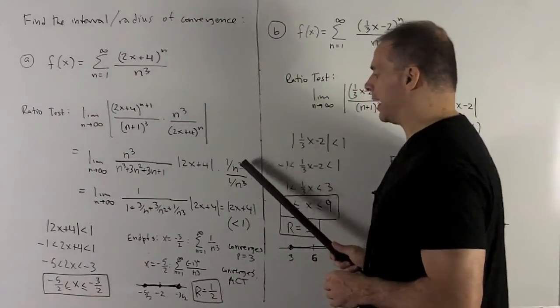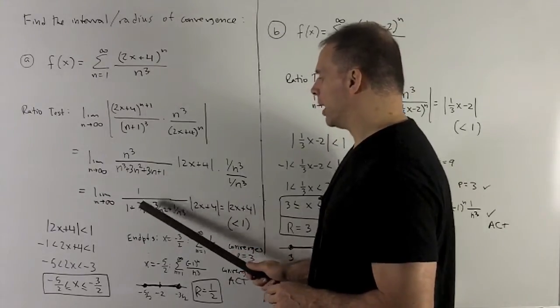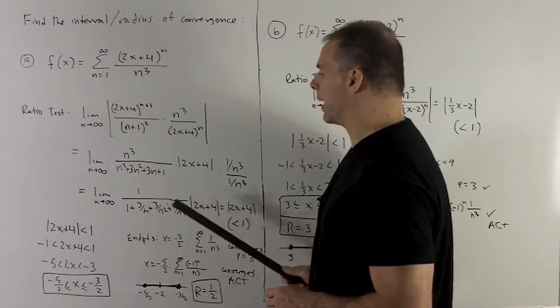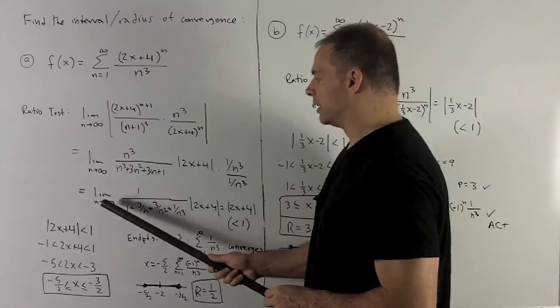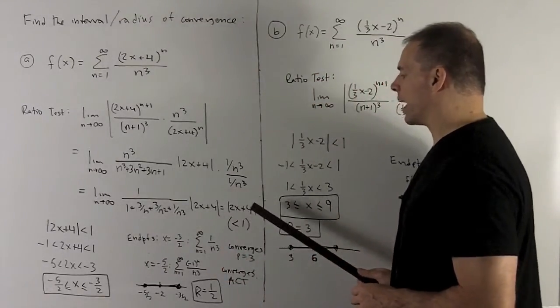I'm going to divide top and bottom here by n cubed. And that's going to reduce this to 1 over 1 plus a bunch of things over powers of n. So as I take the limit as n goes off to infinity, I'm just going to be left with my 2x plus 4 in absolute value.